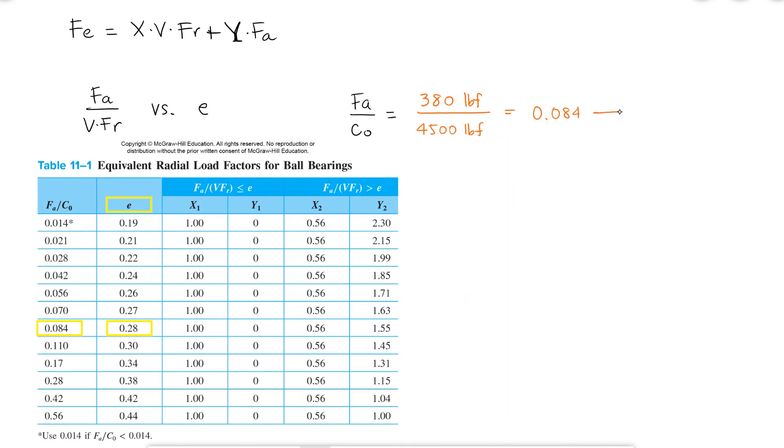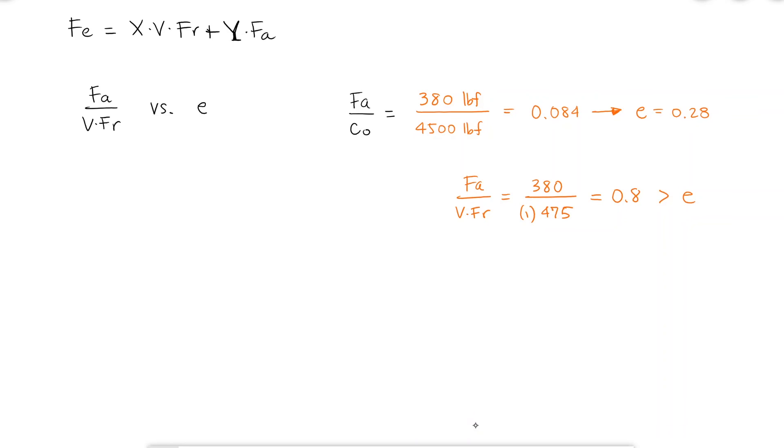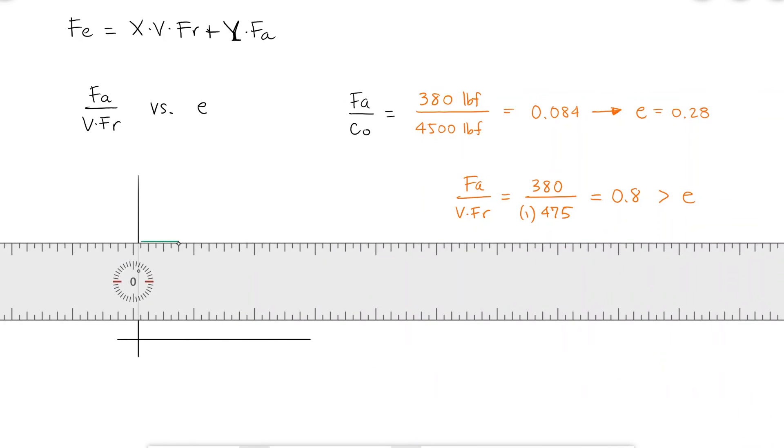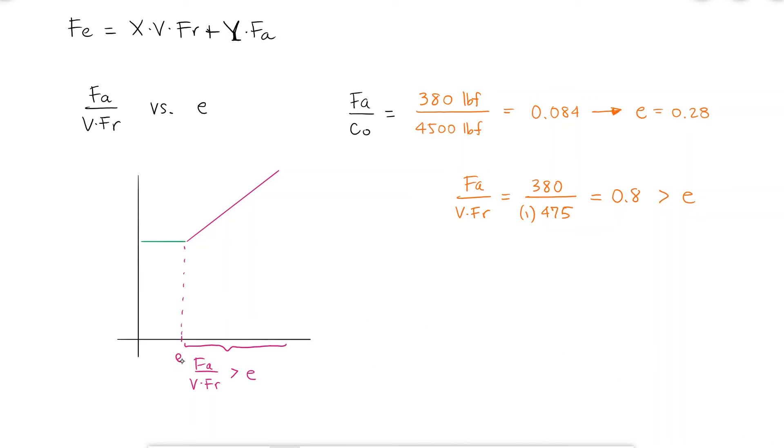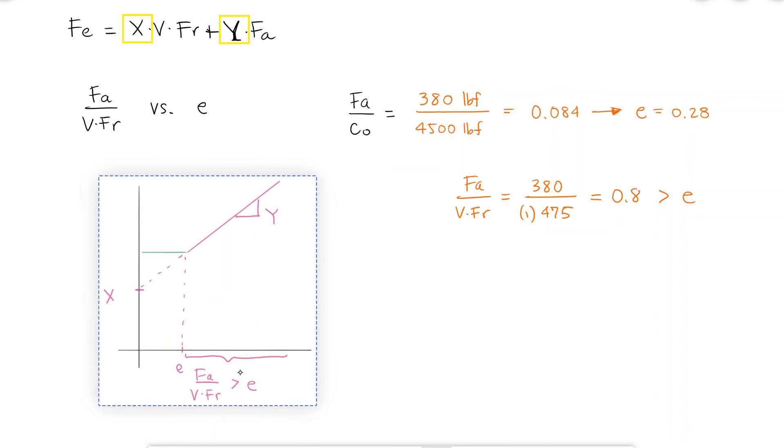With this, I know that E is equal to 0.28. If I calculate FA over VFR, with FR being the radial load also given to me, I find a value that is in fact greater than E. This means that the thrust, or the axial load, is not negligible, and that to find the equivalent load FE, I do indeed need to find the capital X and capital Y values.